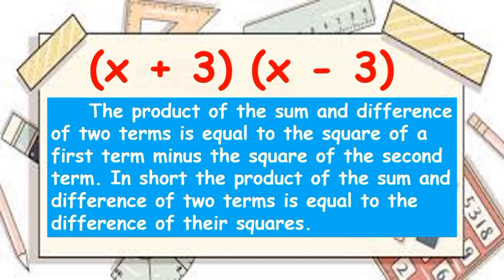In short, the product of the sum and difference of two terms is equal to the difference of their squares.